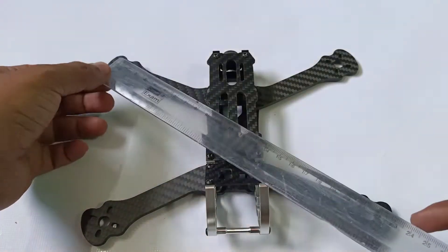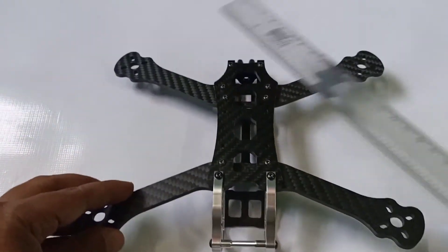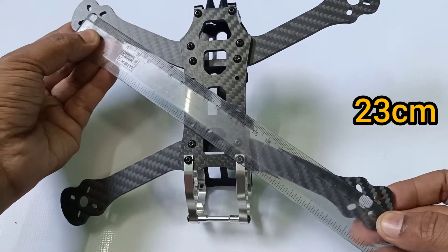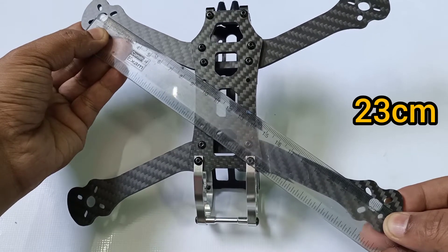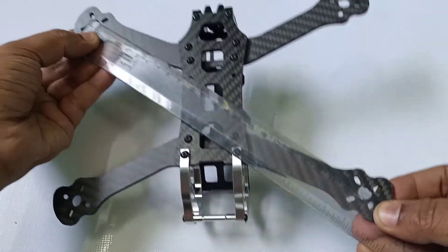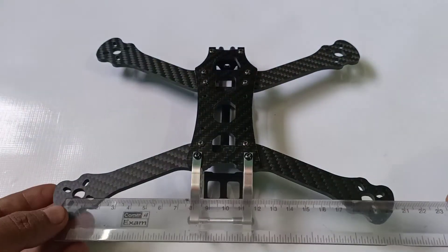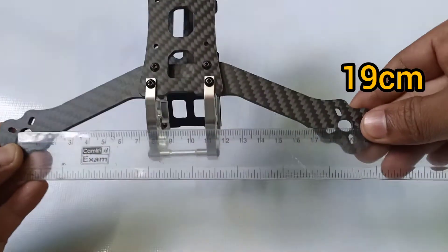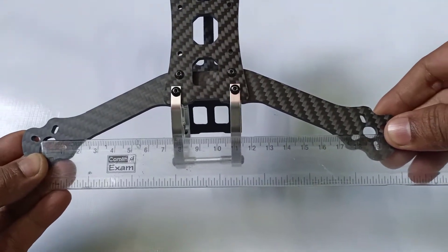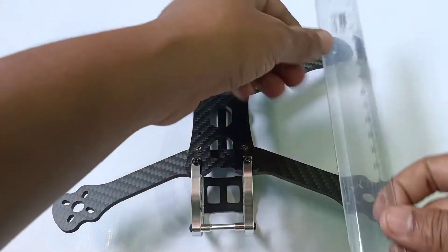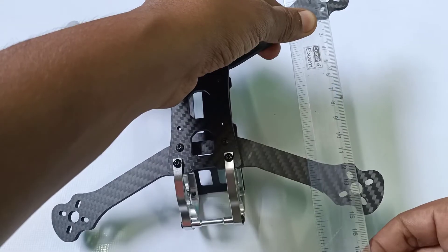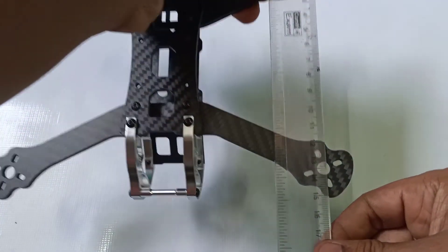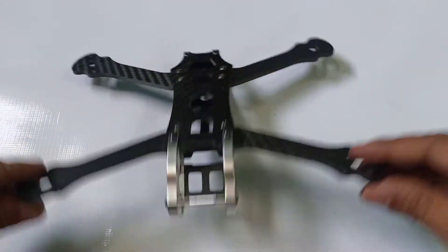For measuring this frame I have a ruler. First, I will measure the distance between the two motors in diagonal, which is 23 centimeters as you can see here. The width of this frame is 19 centimeters and the length is 13.5 centimeters. Now you can imagine the actual size of this frame, how small it is.